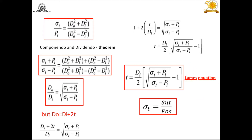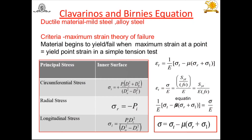Here sigma_t is the allowable or permissible stress, that is the ultimate stress divided by the factor of safety. Now let us see the case when the thick cylinder is made of ductile material such as mild steel or alloy steel.